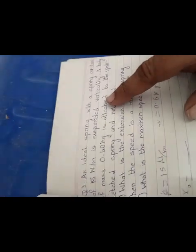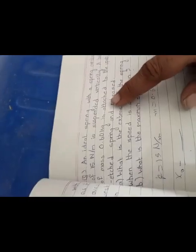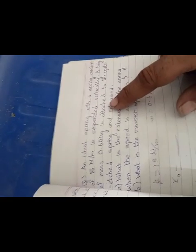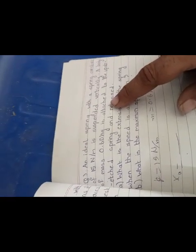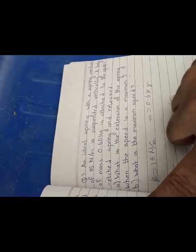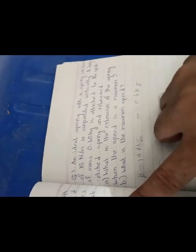Number three: An ideal spring with a spring constant of 15 Newton per meter is suspended vertically. A body of mass 0.6 kg is attached to the unstretched spring and released. What is the extension of the spring at equilibrium?